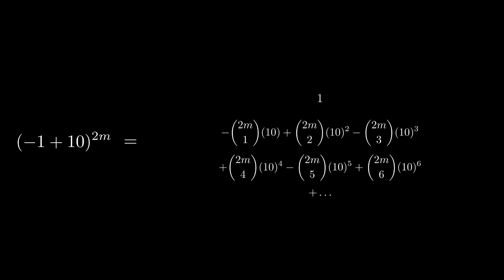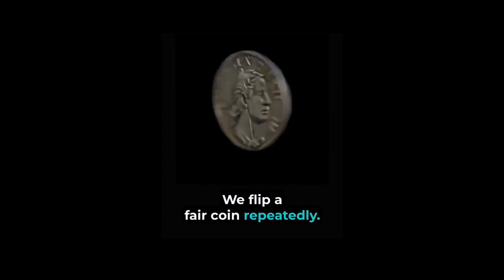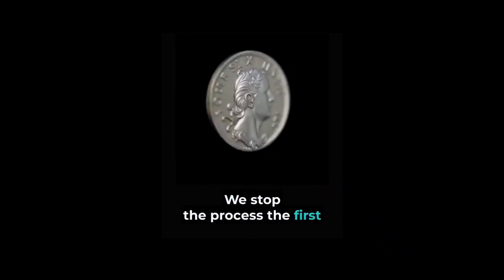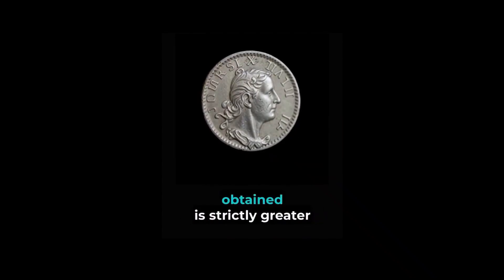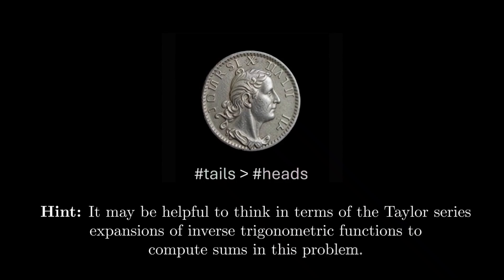Let's consider another problem. We flip a fair coin repeatedly. We stop the process the first time the total number of tails is strictly greater than the total number of heads. At that stopping time, what is the expected proportion of tails among all flips made? It may be helpful to think in terms of the Taylor series expansion of inverse trigonometric functions to compute sums in this problem.